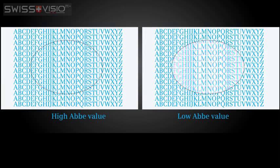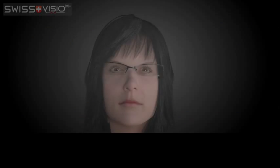Lower Abbe values can result in chromatic aberrations as prescriptions increase. Some people are more susceptible to chromatic aberrations than others.